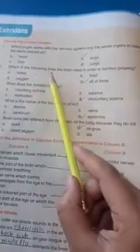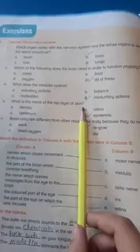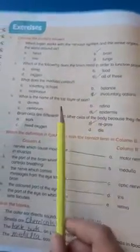Which one of the following does the brain need in order to function properly? What is the brain need in order to function properly? Sleep, food, oxygen, all of this. The skin, and its answer is epidermis.